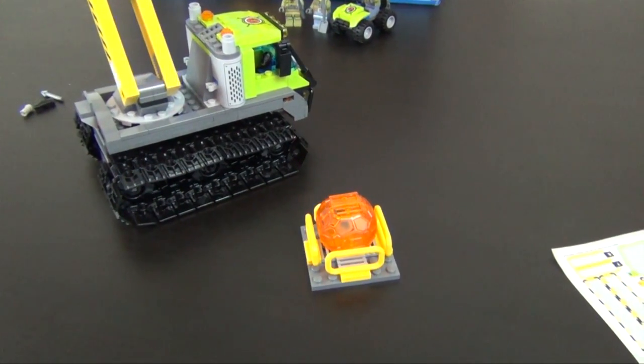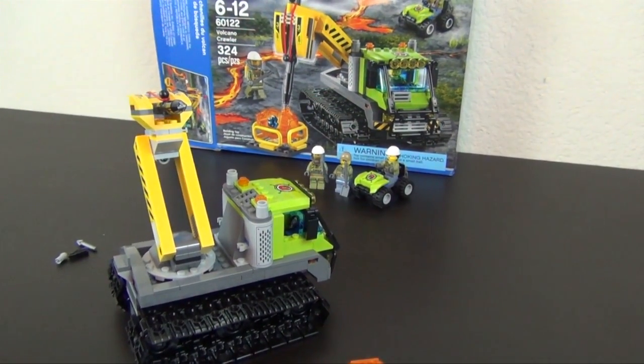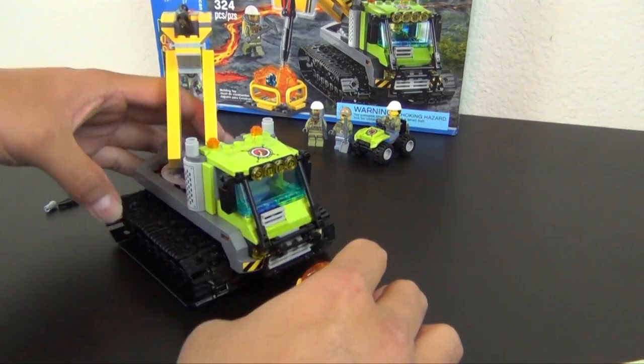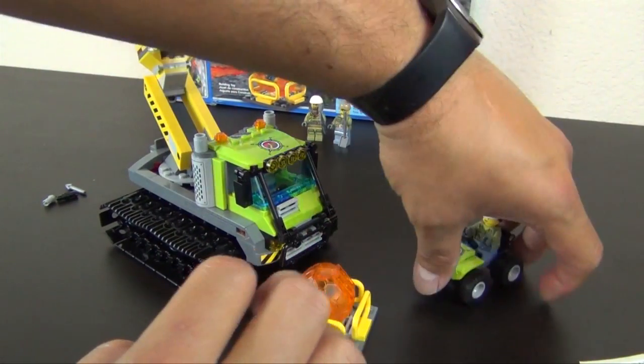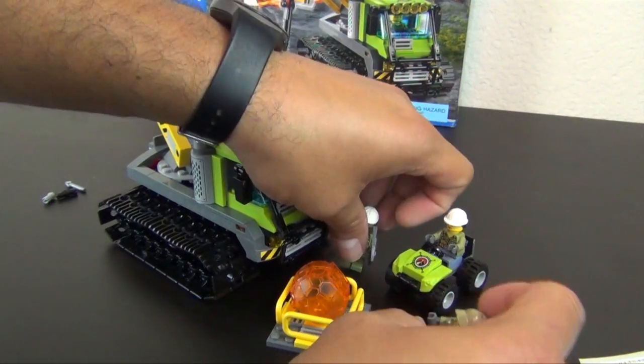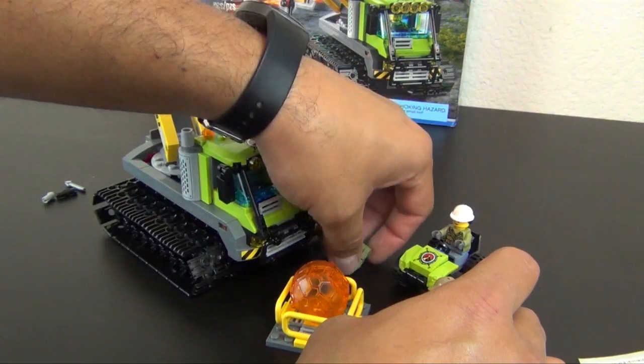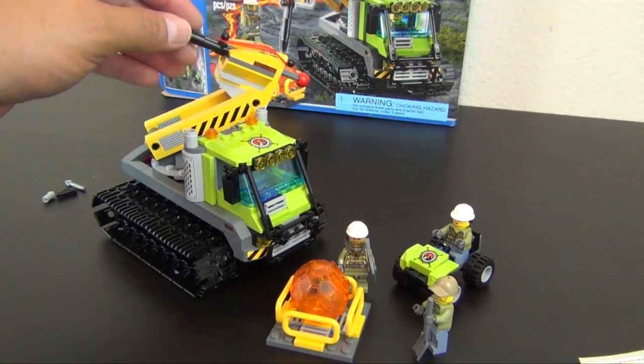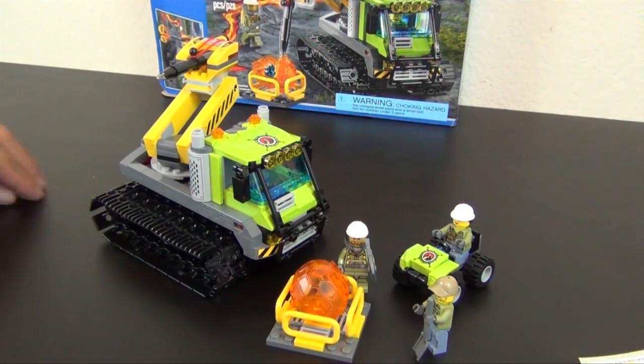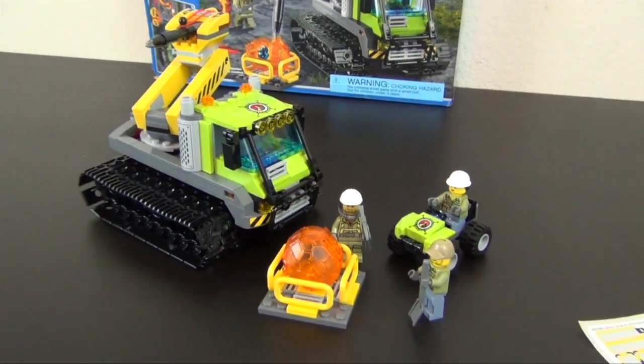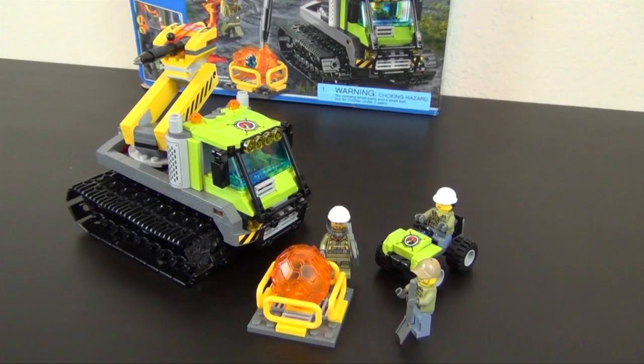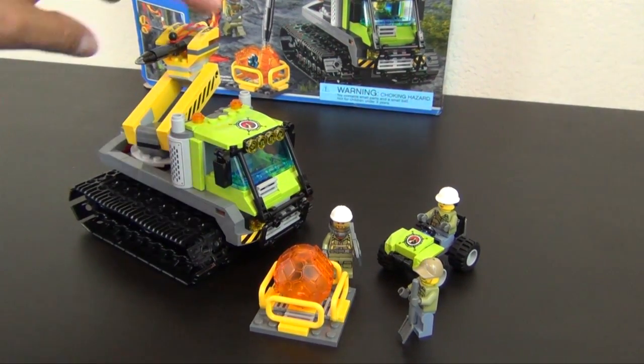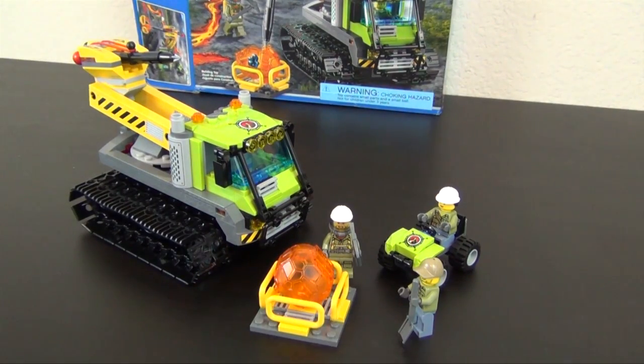Alright, so that does it for the build of the LEGO City Volcano Crawler. I'm going to move this a little bit so you can get a better view of the whole thing. Remember we have our little ATV and then two more explorers. This guy in the fire suit is the one that's going in the volcano. Pretty cool little set. I appreciate you guys watching. Tell me your thoughts, put a comment down below. Do you have this set? Do you want it? Let me know. Make sure to check out my other videos. I've got a lot of LEGO City videos on my channel. So if you love LEGO City as your theme of choice then I've got plenty of videos for you to watch. So subscribe, check out my LEGO City playlist and we'll see you tomorrow.